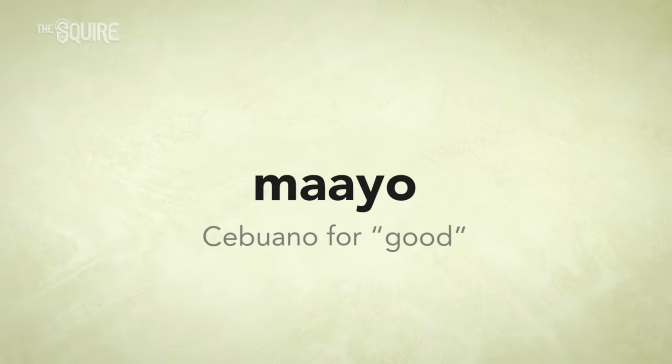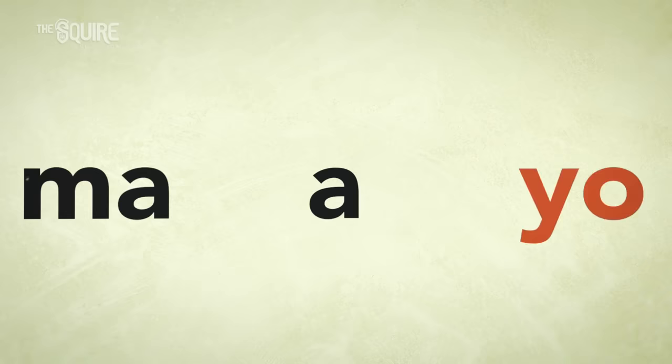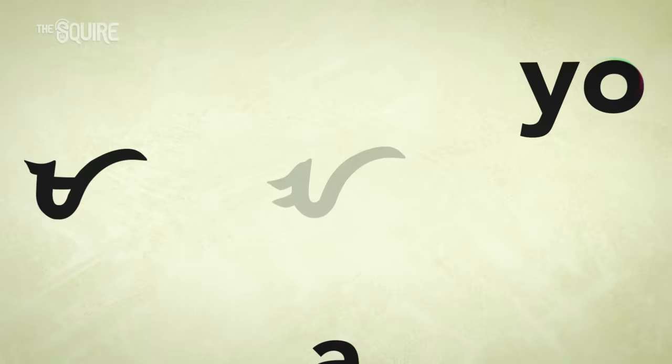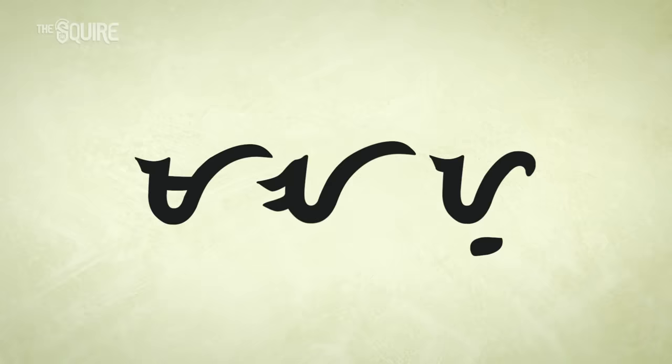With that in mind, if you have a word like 'Maayo,' writing it will break it down to MA, A, and YO, with each syllable corresponding to one character.